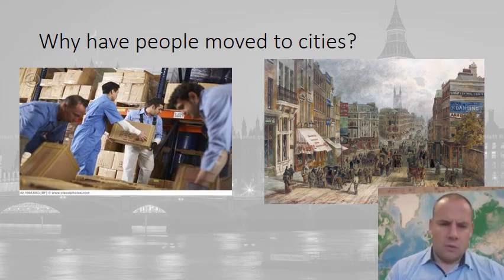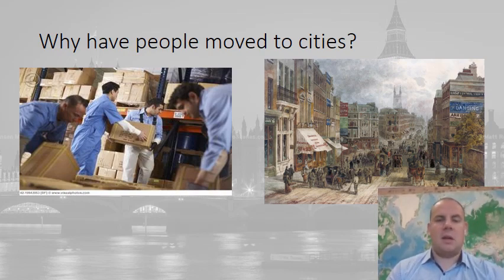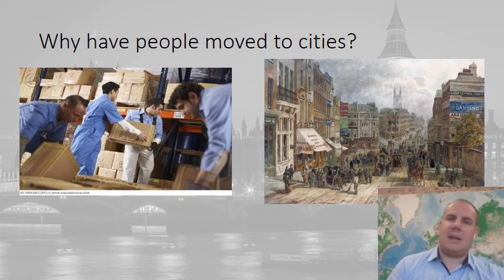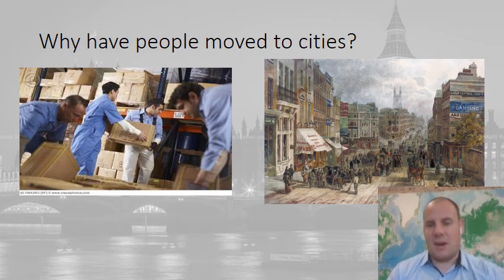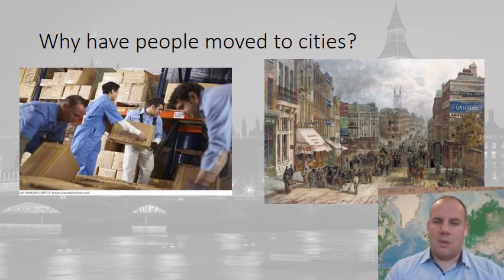Looking at why people move from the countryside to cities — the first reason is job opportunity. People perceive cities as places where they'll get jobs, better standards of living, more access to education, and better medical facilities. However, this other picture of 1800 Victorian London shows the conditions people actually end up living in — substandard housing and not enough resources and services.